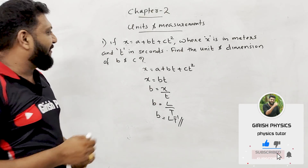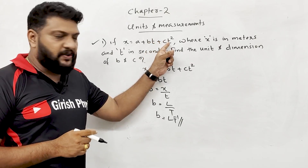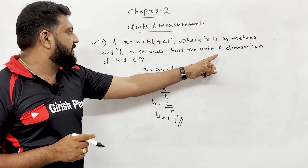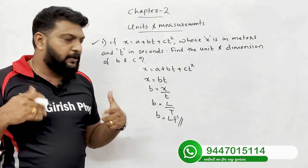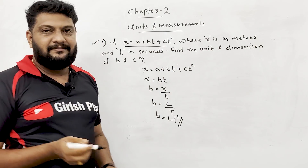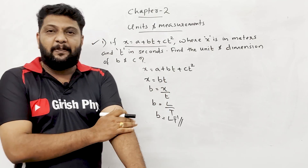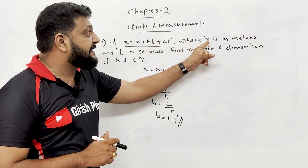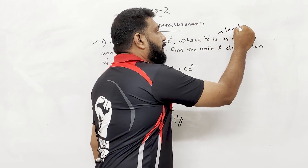Question one: x is equal to a plus bt plus ct squared, where x is in meters and t is in seconds. Find the unit and dimension of b and c. Since x is in meters, that means x represents length — unit: meter.